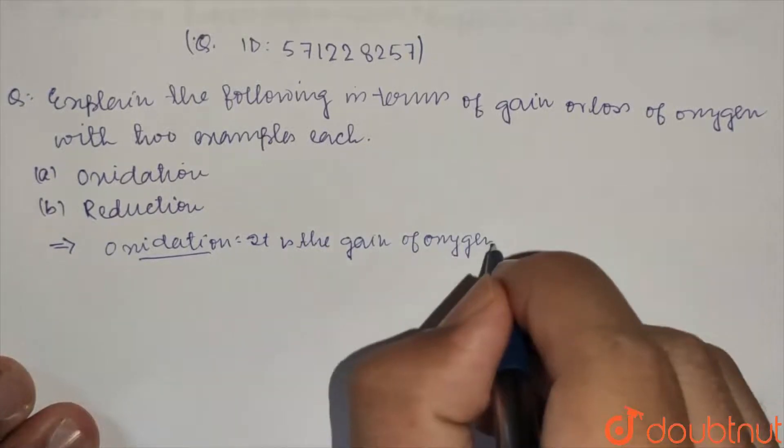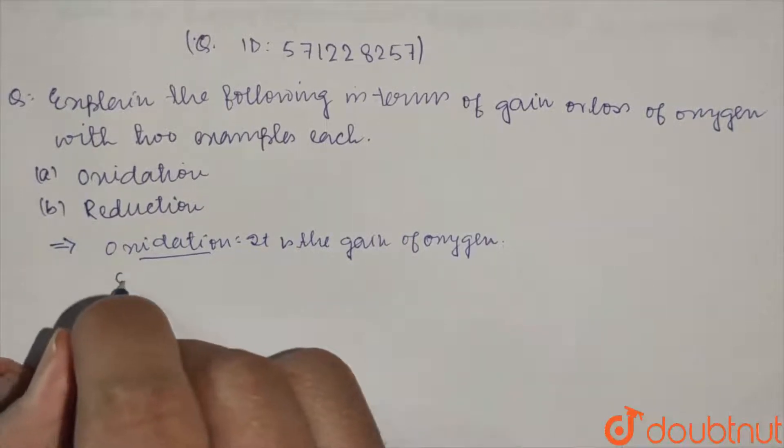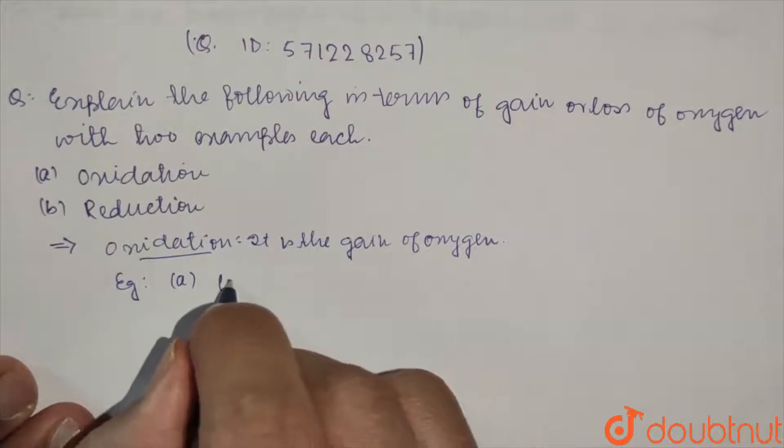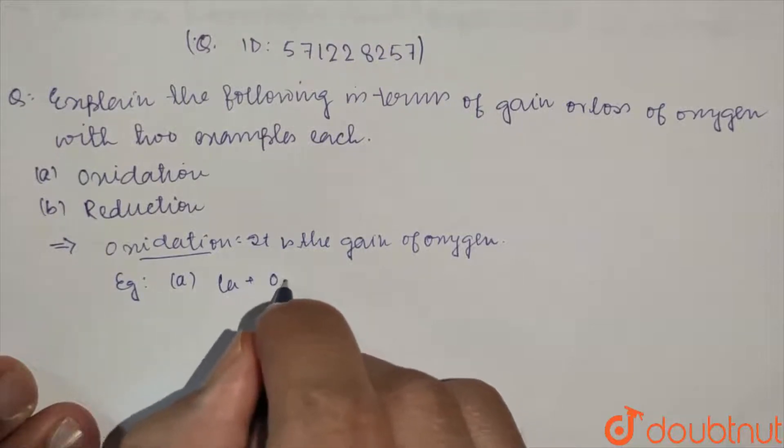Now we need two examples. First one can be formation of calcium oxide.